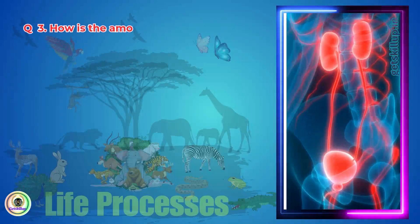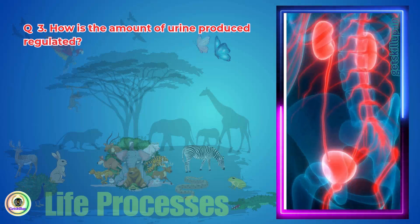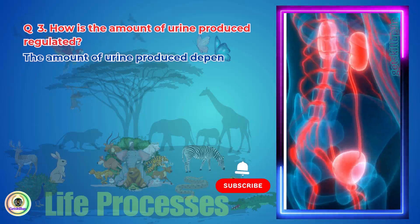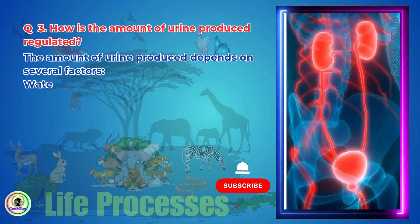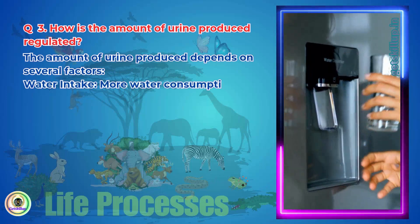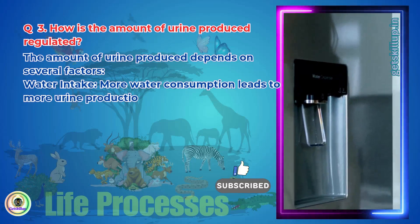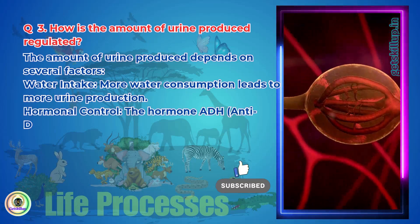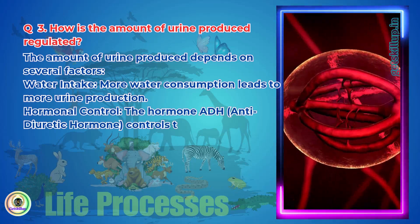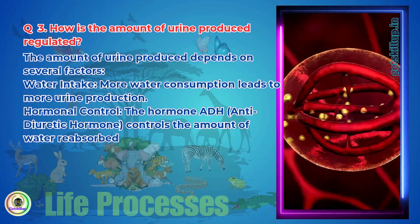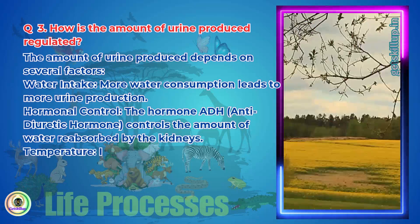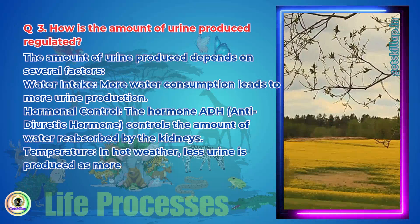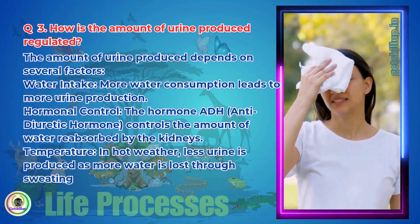Question 3: How is the amount of urine produced regulated? The amount of urine produced depends on several factors. Water intake — more water consumption leads to more urine production. Hormonal control — the hormone ADH (anti-diuretic hormone) controls the amount of water reabsorbed by the kidneys.